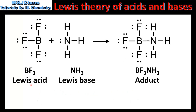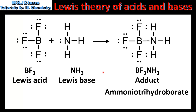Boron trifluoride acts as a Lewis acid by accepting a lone pair of electrons from ammonia. Ammonia is donating a lone pair of electrons, therefore it is acting as a Lewis base. Once again we have the formation of a coordinate covalent bond between BF3 and NH3, which results in the formation of the adduct.